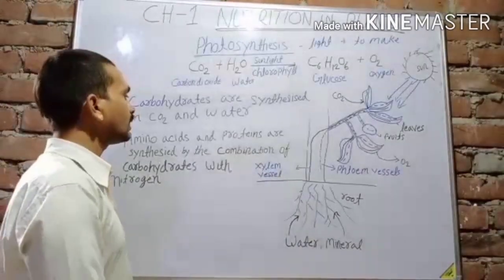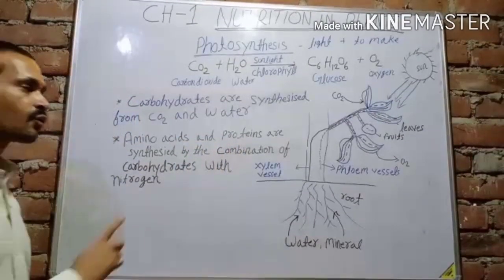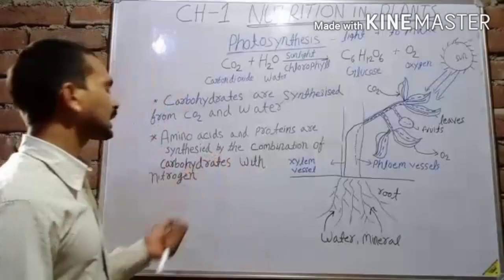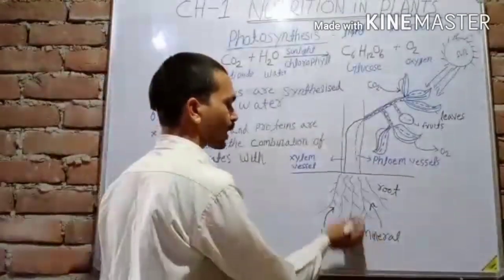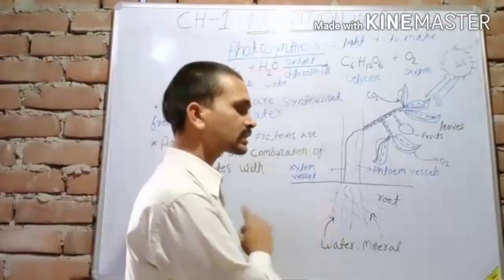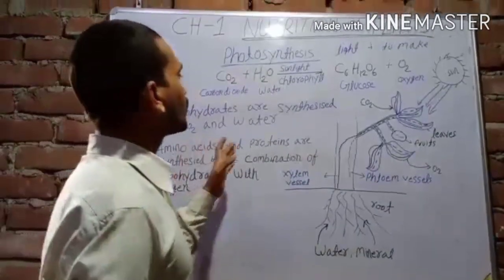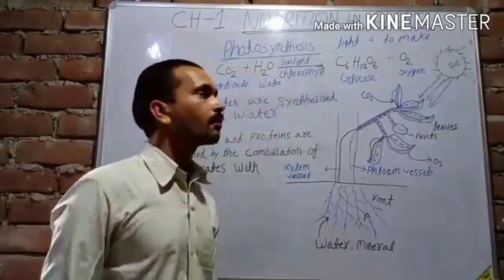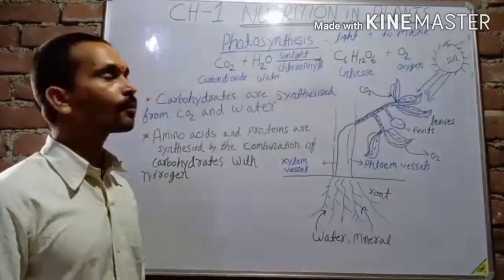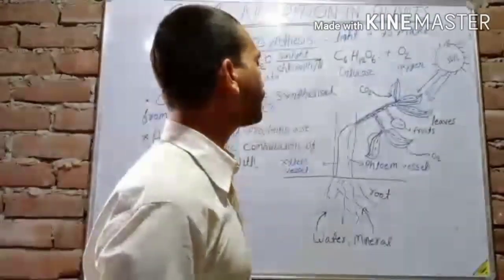Amino acids and proteins are formed by the combination of carbohydrates and nitrogen. Plants take nitrogen from the soil in the form of nitrate. The plant makes too much food but cannot utilize all of it, so it stores some food in the form of fruit, leaves, stem, and root.